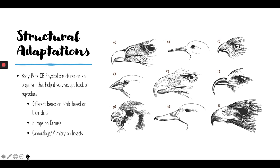Another example is the hump on a camel, which is used to store water. Because the camel lives in a desert and there's not a lot of water around, it has to store it when it finds it.